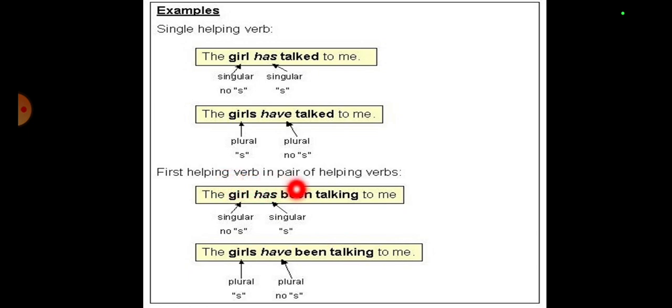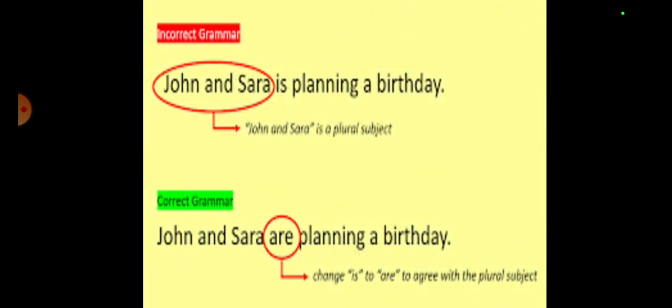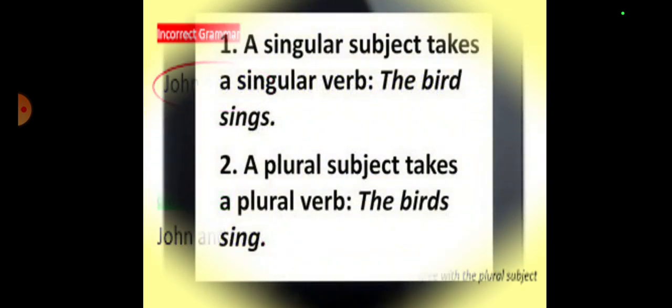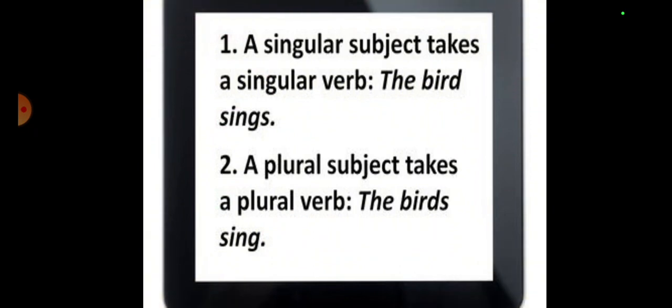Next, John and Sarah is planning a birthday. Remember, they are two persons, that is why you are bound to use are. There are conditions where there are two or three subjects and we use singular, which I will explain in the upcoming slides. I also quoted in the previous lesson.